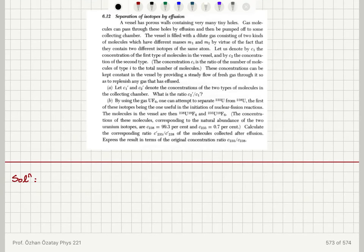Separation of isotopes by effusion. A vessel has porous walls containing very many tiny holes. Gas molecules can pass through these holes by effusion and then be pumped off to some collecting chamber. The vessel is filled with a dilute gas consisting of two kinds of molecules which have different masses M1 and M2, by virtue of the fact that they contain two different isotopes of the same atom.